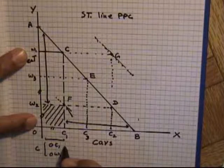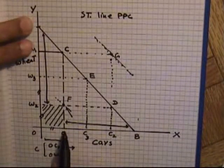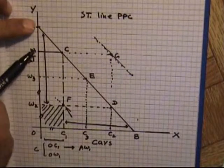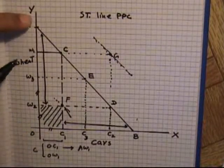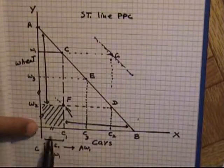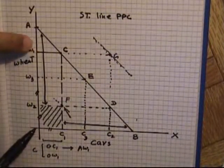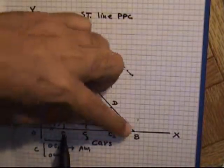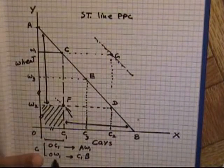If the country is producing OC1 of cars, it is not capable of producing AW1 of wheat, because only this much resources are available to produce wheat. Therefore, AW1 is the opportunity cost of producing OC1 of cars. Likewise, if the country decides to produce OW1 of wheat, then the maximum cars it can produce is OC1, and what it cannot produce — C1B — is the opportunity cost of OW1 of wheat.